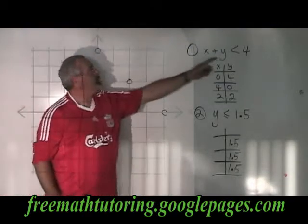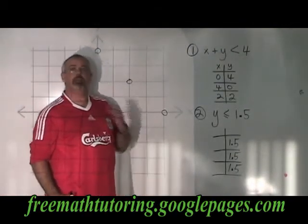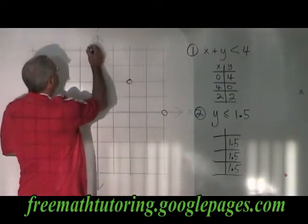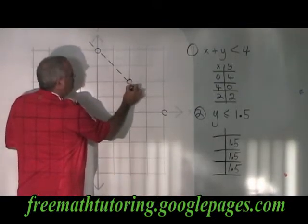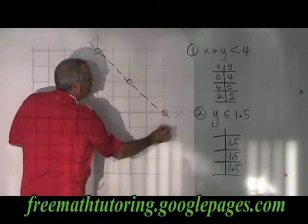I have to draw a line through these. I checked my symbol, and I realized it has to be a dotted line. There is no or equal to line underneath the symbol.